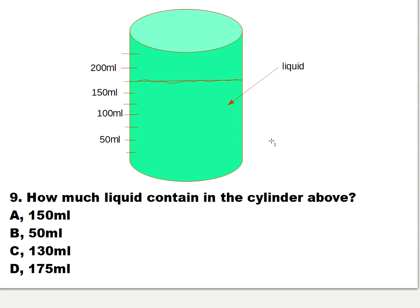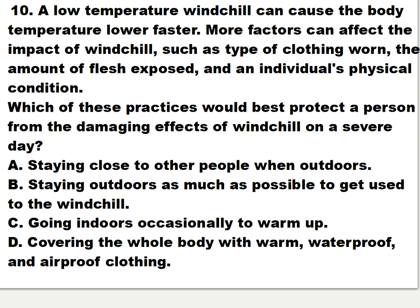Question nine: I drew another cylinder with liquid in it — this is the easiest of all eleven questions. How much liquid is in the cylinder? Is it A: 150 ml, B: 50 ml, C: 130 ml, or D: 175 ml? The answer is letter D — 175 ml. The markings show 50 and 100 and 50, and it falls in between, reading at the 175 ml line.